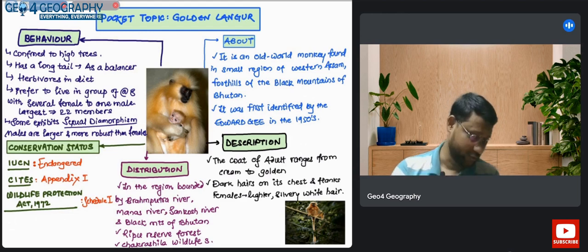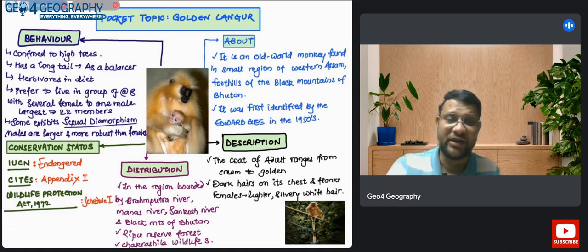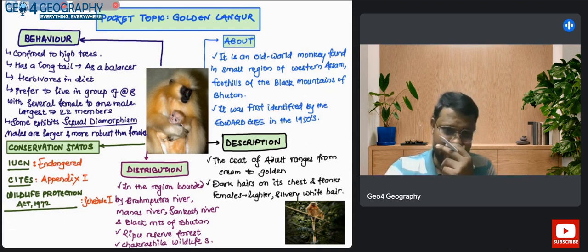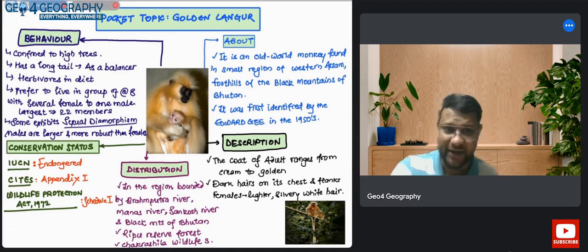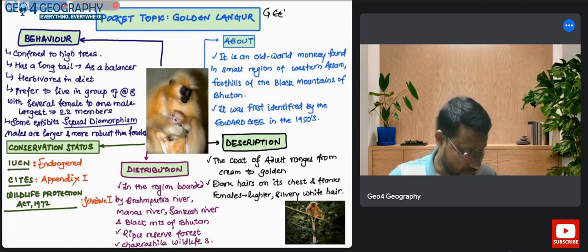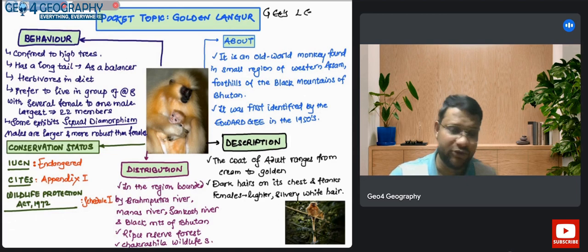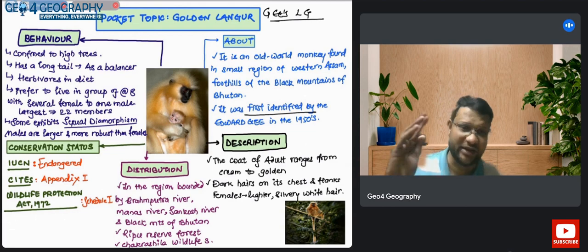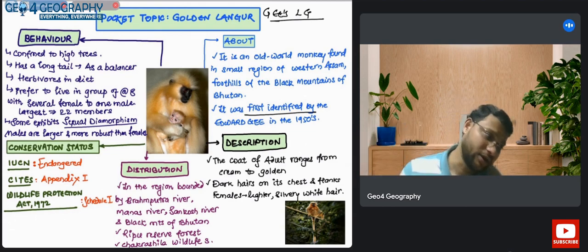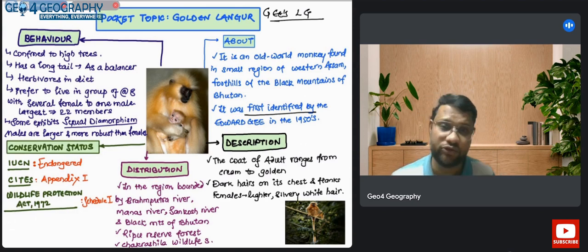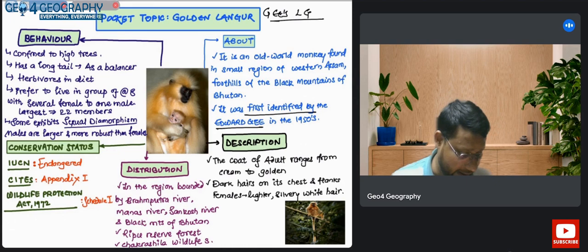Today's topic is on an environmental species that is very unique - the Golden Langur from the kingdom Animalia. This Golden Langur is also known as Gee's Golden Langur because it was first identified to the western world by Edward P. Gee in the 1950s, though it existed since ancient times.